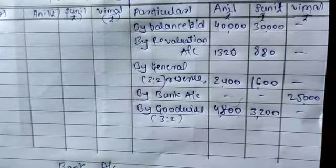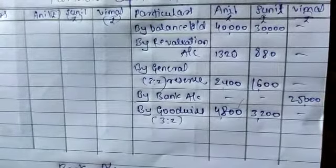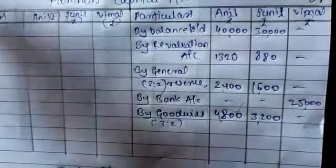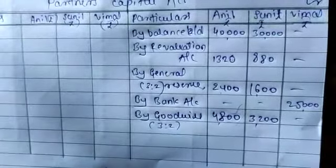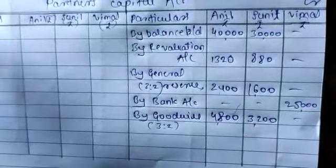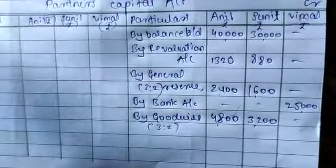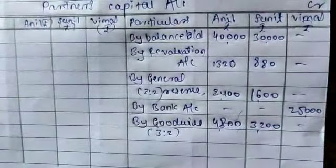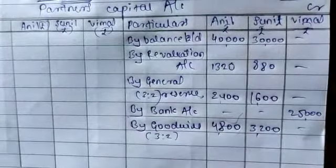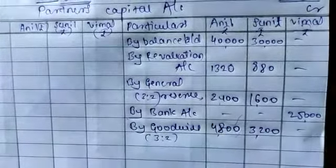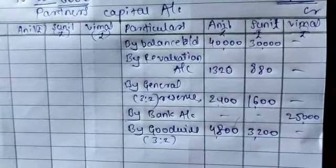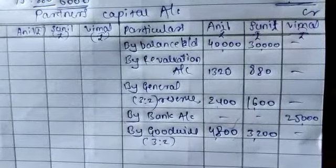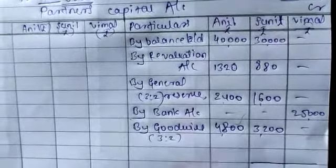The goodwill treatment here: the goodwill amount is retained in the business and continued in the business. So it should be entered in the bank account as well as the goodwill account. In the new posting, goodwill account and bank account are both used, then close these accounts.